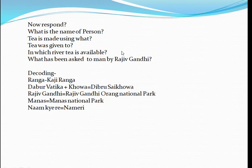You might be thinking that this is a funny story, but it includes all the national parks of Assam. Ranga means Kaziranga. Dabar Vatika plus kova — both were added — and it is known as Dibru Saikhowa.